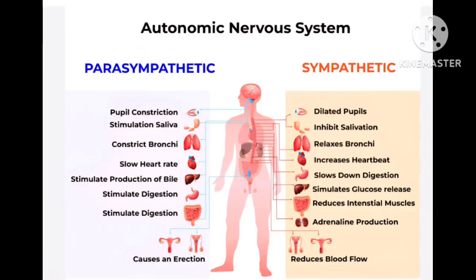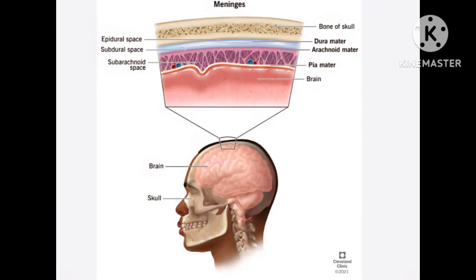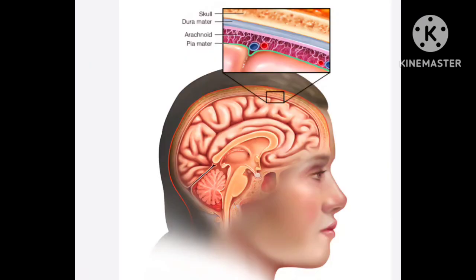Now let us move to certain other structures surrounding the brain. There is a structure called the meninges which covers both the brain and the spinal cord. It is made up of three layers: dura mater, arachnoid mater, and pia mater. You can remember them with the mnemonic DAP — dura, arachnoid, and pia mater. This structure protects both the brain and the spinal cord.